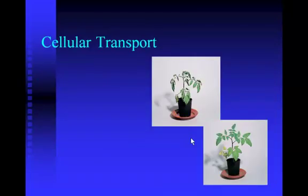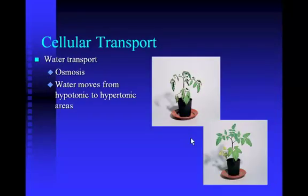If you take a look at these plants, this shows the effects of osmosis — the movement of water through plants. Water wants to move from a hypotonic to a hypertonic environment. So if you take the plant in the top picture and put it in a hypotonic environment — an environment where there is more water — the water would move into the plant cells and the plant would start to look like the plant in the bottom picture.